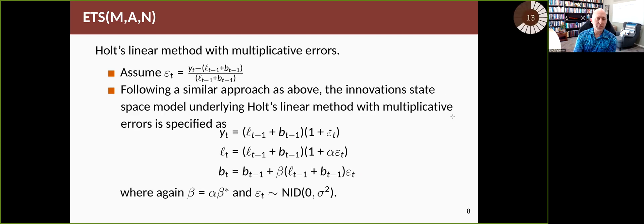The MAN model, multiplicative errors and additive trend and no seasonality, is obtained when we assume that the relative error is the stochastic independent error term. And again, plug it in, rearrange the equations and we get this set of equations, which is for the multiplicative version of Holt's linear method.